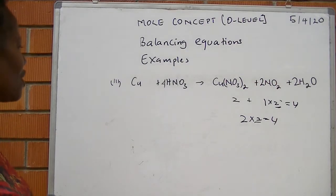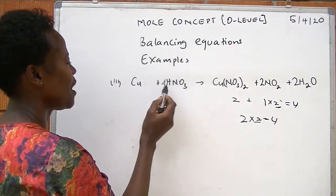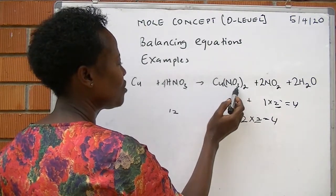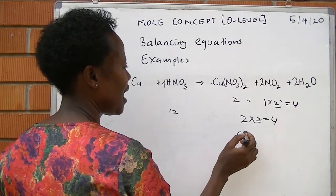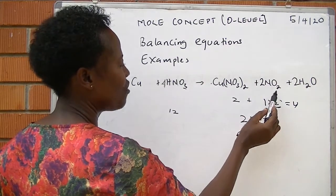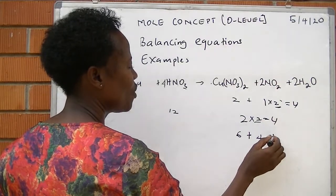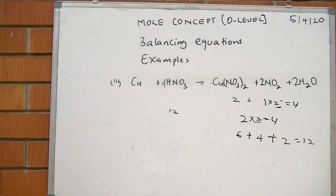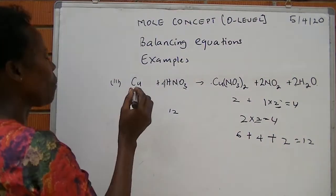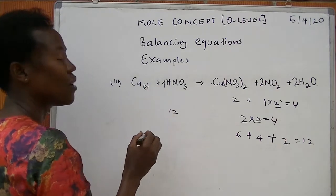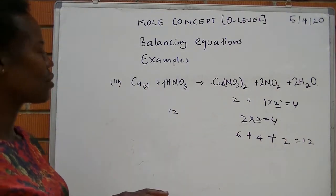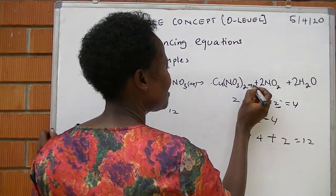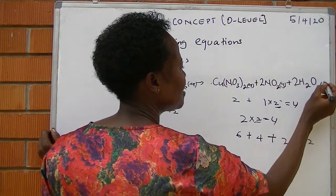Checking oxygen: on the reactant side, three times four equals twelve. On the product side, copper nitrate gives two times three equals six, times one is six; nitrogen dioxide gives two times two equals four; and water gives two times one equals two. The total is twelve — oxygen balances. The equation is balanced. Copper is in a solid state; nitric acid is aqueous; copper nitrate is aqueous; nitrogen dioxide is a gas; and water is a liquid.